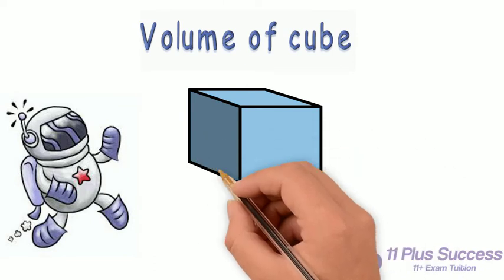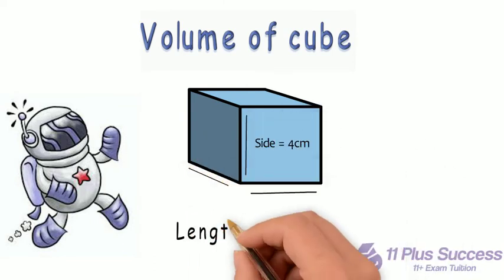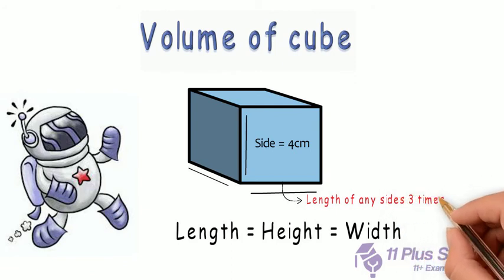To find the volume of a cube, we simply multiply length, width, and height. But since each dimension of a cube is exactly the same, you can multiply the length of any side three times.